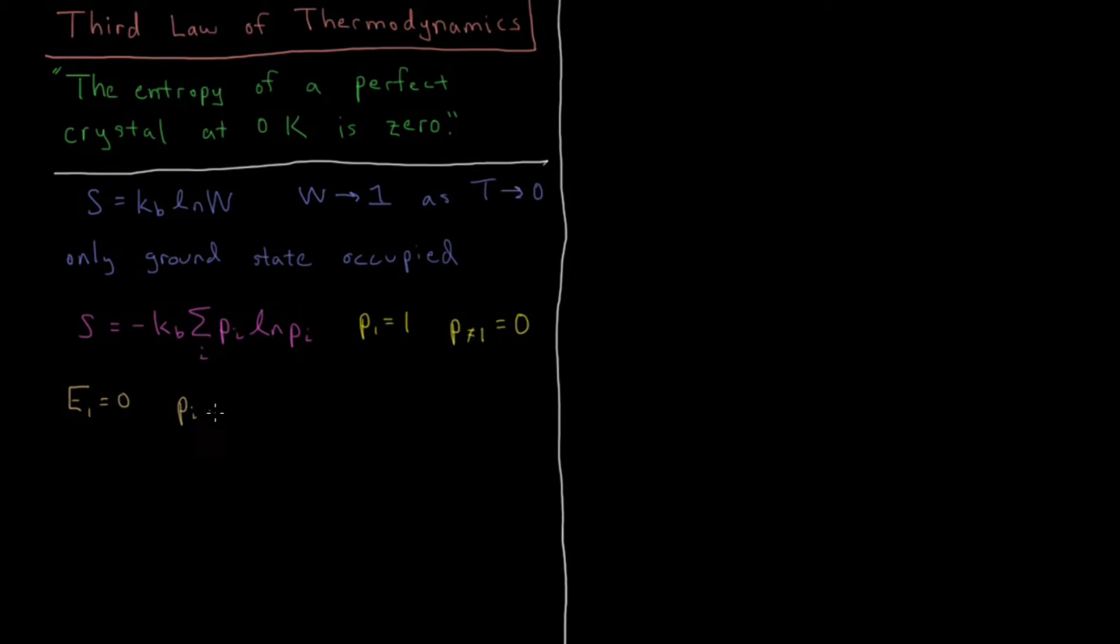We remember that our probability for a given state is proportional to the Boltzmann factor e to the minus Ei over kBT. And as the temperature goes to zero, then we are going to have some number divided by zero, so this is going to go to infinity here, and then multiplying by minus we get minus infinity. So the probability becomes proportional to e to the minus infinity, which is one over e to the infinity, which is zero. So the probability of any state with energy higher than the ground state approaches zero as T goes to zero.